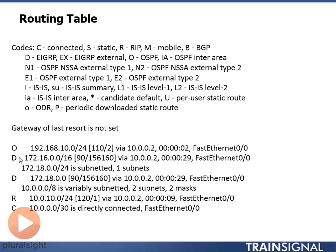Next, I have a 'D' route, which stands for EIGRP. Looking up at the table, D is EIGRP. Why didn't they use an E? There are some external routes noted with an E. They use D because EIGRP's algorithm to calculate which route to add to the routing table is called DUAL — the Diffusion Update Algorithm — so the code is named D after that algorithm. In the brackets, the first number is the administrative distance and the second is the metric. Notice that EIGRP uses a different metric value than OSPF. We'll look at exactly how these metrics are calculated in dedicated OSPF and EIGRP videos.